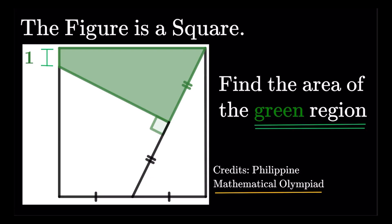Here's an item on geometry. The figure is a square, as you can see. Find the area of the green region.